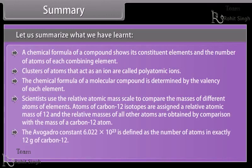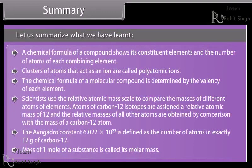The Avogadro constant, 6.022 × 10^23, is defined as the number of atoms in exactly 12 grams of carbon-12. Mass of one mole of a substance is called its molar mass.